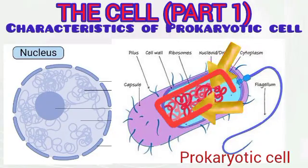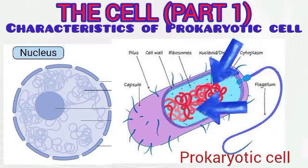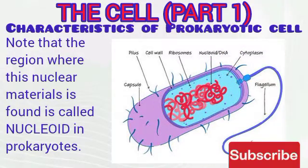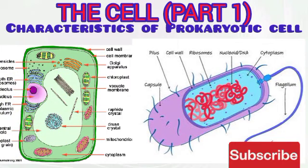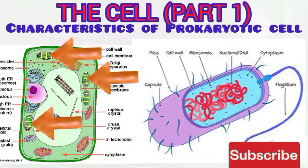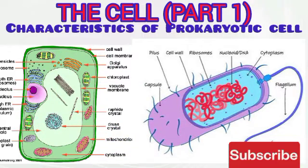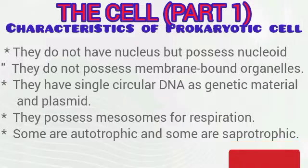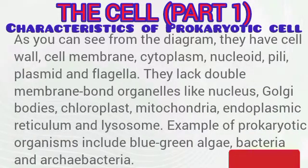The nuclear material is actually scattered within the cytoplasm. Also, eukaryotic cells have double membrane-bound organelles such as the mitochondrion, the chloroplasts, and others — but these double membrane-bound organelles are lacking in the prokaryotic cell. Prokaryotic cells possess single circular DNA as genetic material and plasmids. Some are autotrophic while others are heterotrophic.